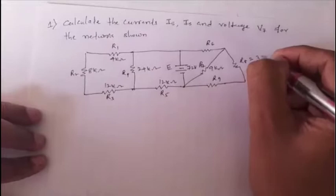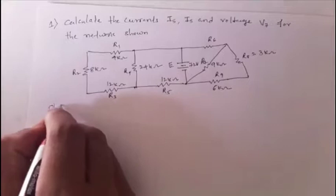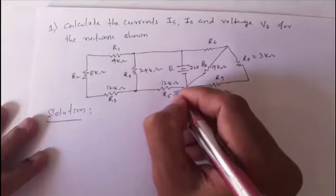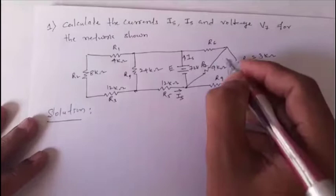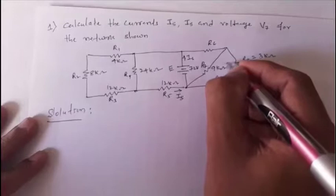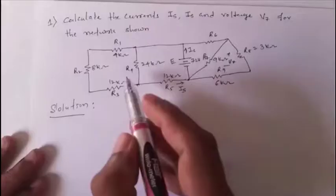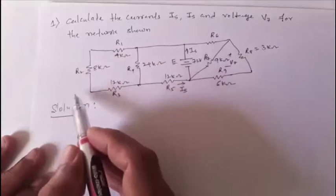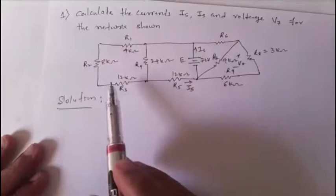The solution requires calculating current i5 shown in the network and voltage v7 across r7. To proceed, notice that the left side of the network is simple to simplify because r1, r2, and r3 are all in series.